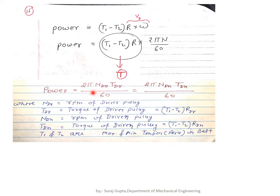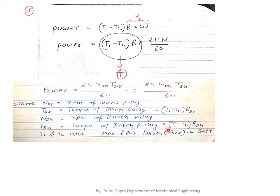Power at the driver pulley equals 2πN_dr · T_dr / 60, which equals 2πN_dn · T_dn / 60 at the driven pulley, where T_dr and T_dn are the torques at the driver and driven pulleys respectively. The torque at the driver pulley is (T₁ − T₂) × R_dr, and similarly at the driven pulley it is (T₁ − T₂) × R_dn. These are the key formulas for power in a belt drive.